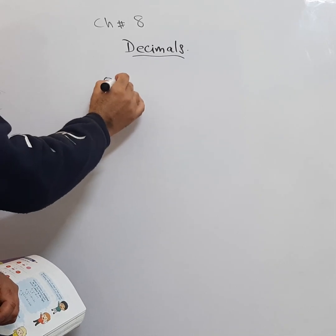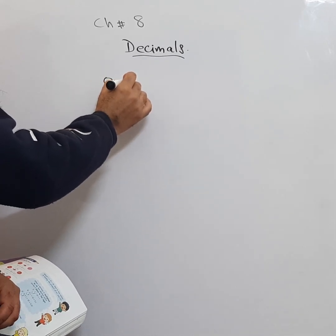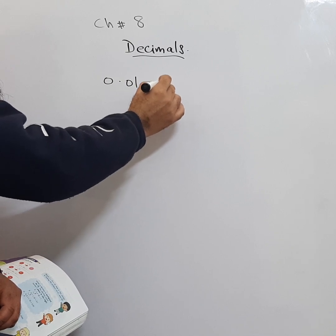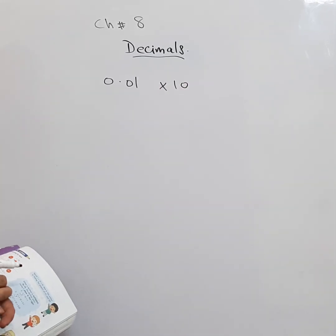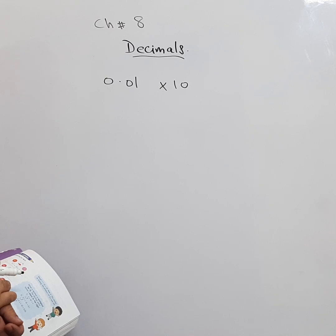If there is one number, 0.01, and you want to multiply it with 10.